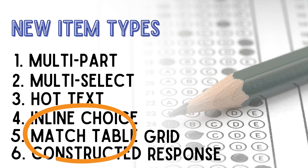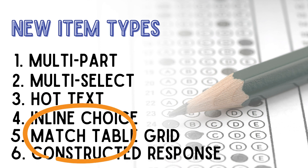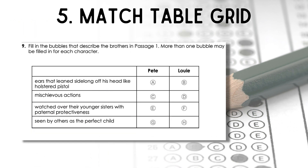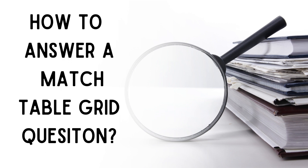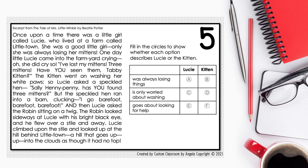There are six new item types. In this video, I will focus on match table grid questions. Match table grid is a question where students will select an answer from a table. To better help you and your students learn how to answer a match table grid question, let's work through one from start to finish.